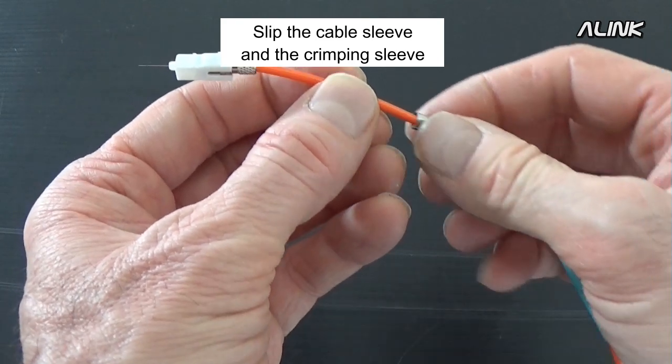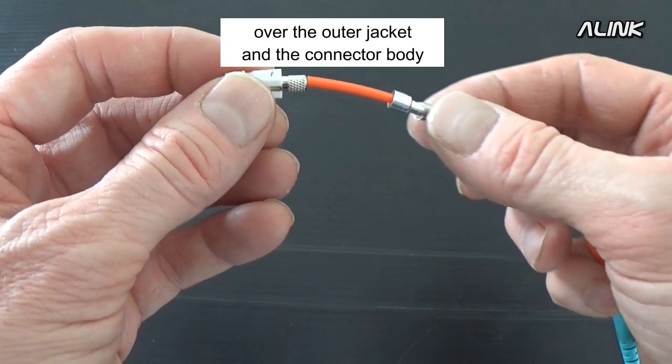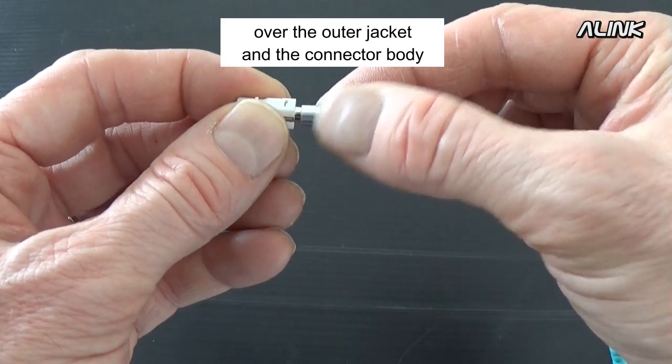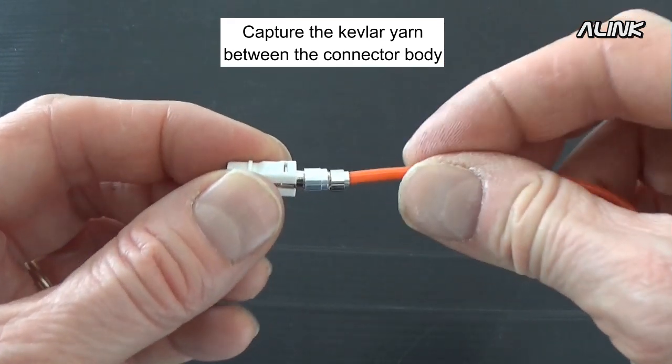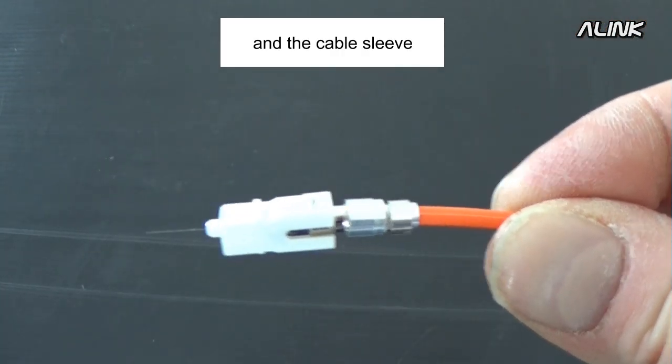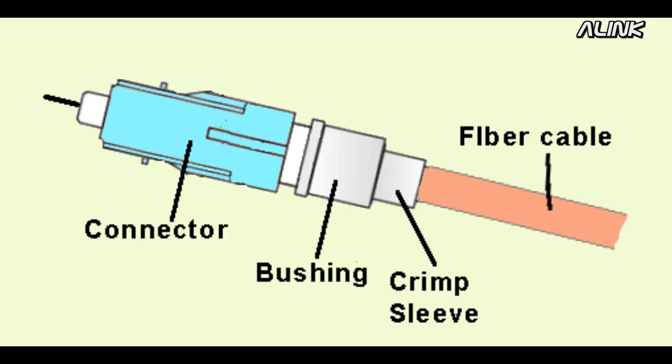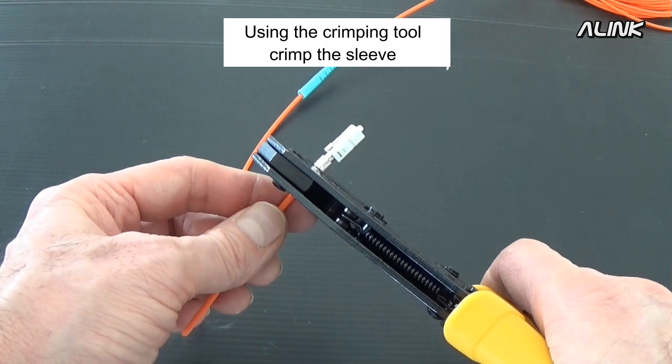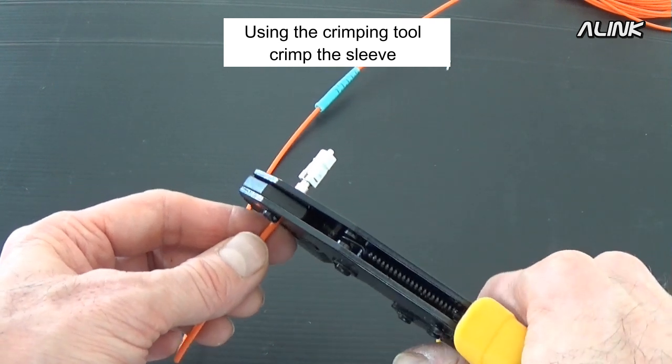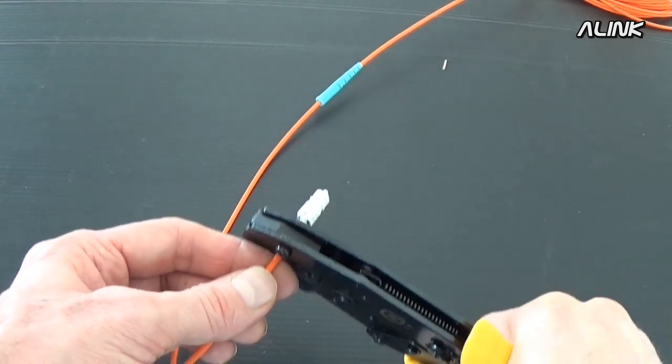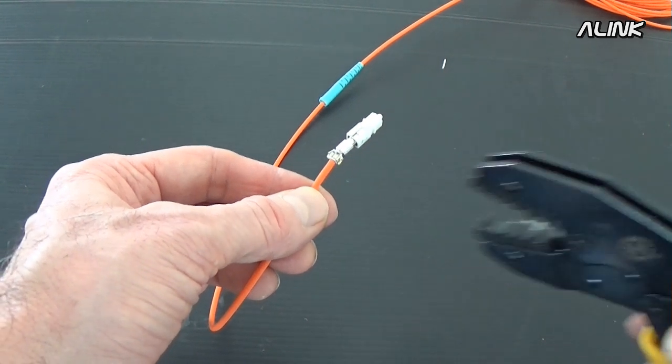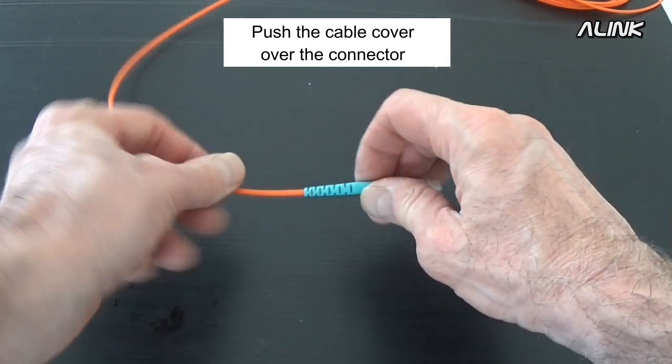Slip the cable sleeve and the crimp sleeve over the outer jacket and the connector body. Capture the Kevlar yarn between the connector body and the cable sleeve. Using the crimping tool, crimp the sleeve. Push the cable cover over the connector.